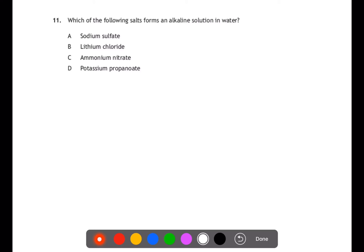Question eleven. Which of the following salts forms an alkaline solution when in water? To form an alkaline solution, you need to use a weak acid and a strong base to make your salt. Sodium sulfate would have been made from sodium hydroxide and sulfuric acid, so that would be strong and strong. Lithium chloride would also have been made from lithium hydroxide and hydrochloric acid, which are both strong. Ammonium nitrate would have been made from ammonia, which is a weak base, and nitric acid which is a strong acid. And finally potassium propanoate would be made from potassium hydroxide, which is a strong base, and propanoic acid which is a weak acid. So D is our answer.